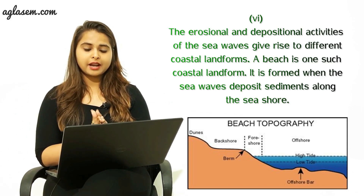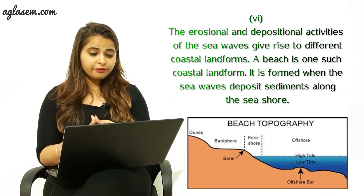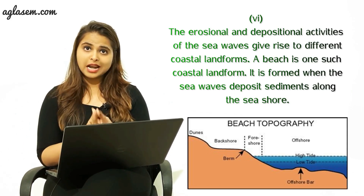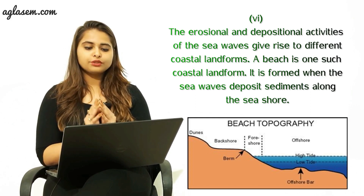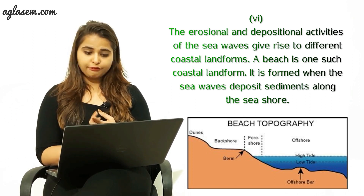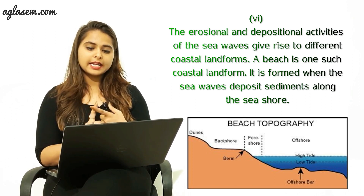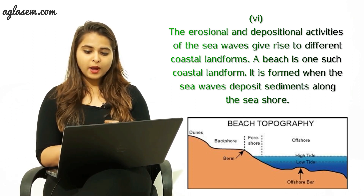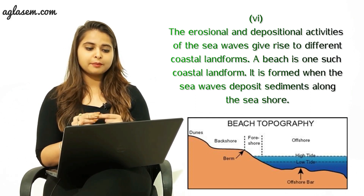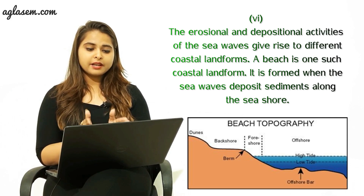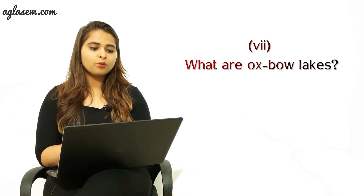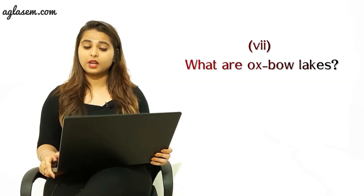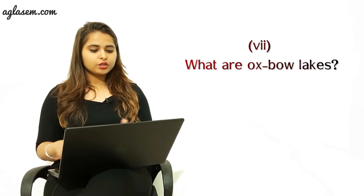The next question: how are beaches formed? The answer is: the erosional and depositional activities of sea waves give rise to different coastal landforms, and a beach is one of the coastal landforms. It is formed when sea waves deposit sediments along the shore.